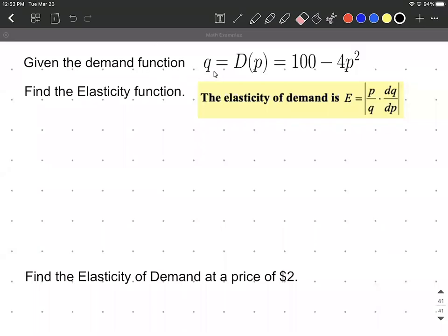Alright, on this example we're given a demand function, so it could be represented with q equals 100 minus 4p squared, or sometimes we use d of p equals 100 minus 4p squared.